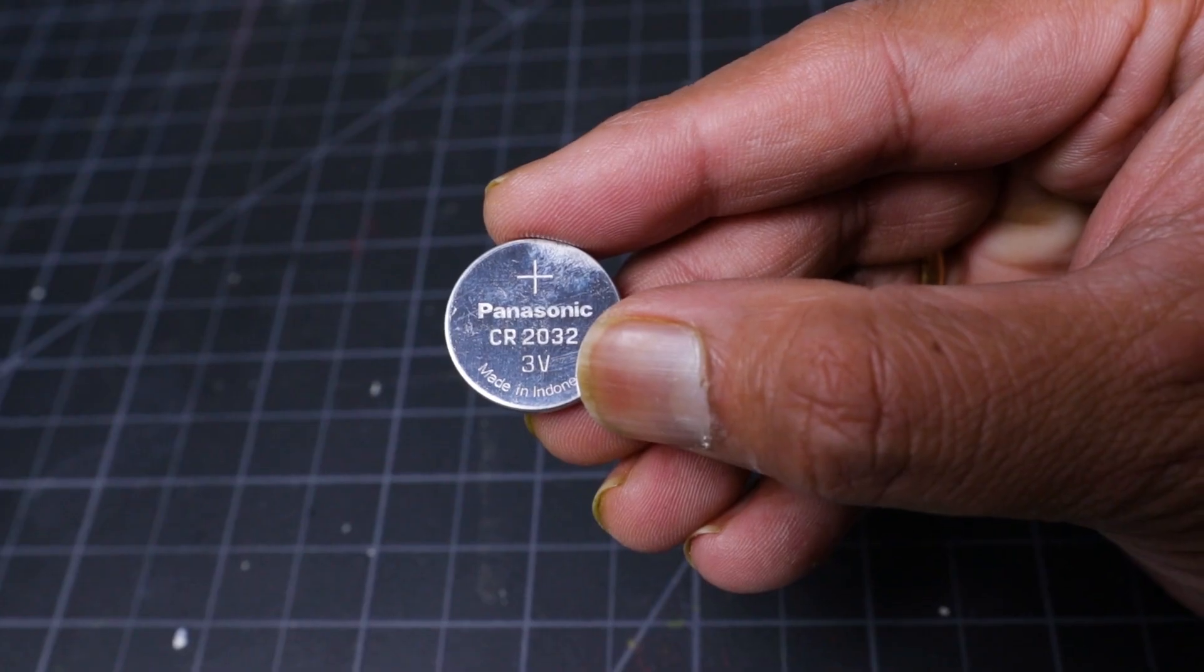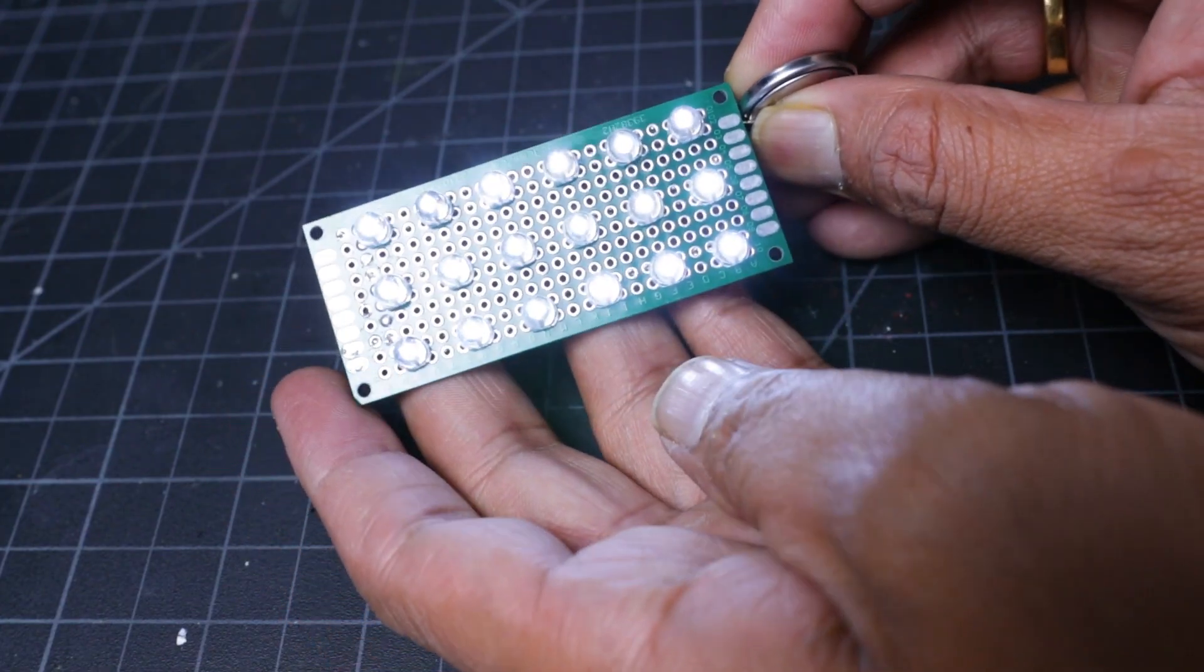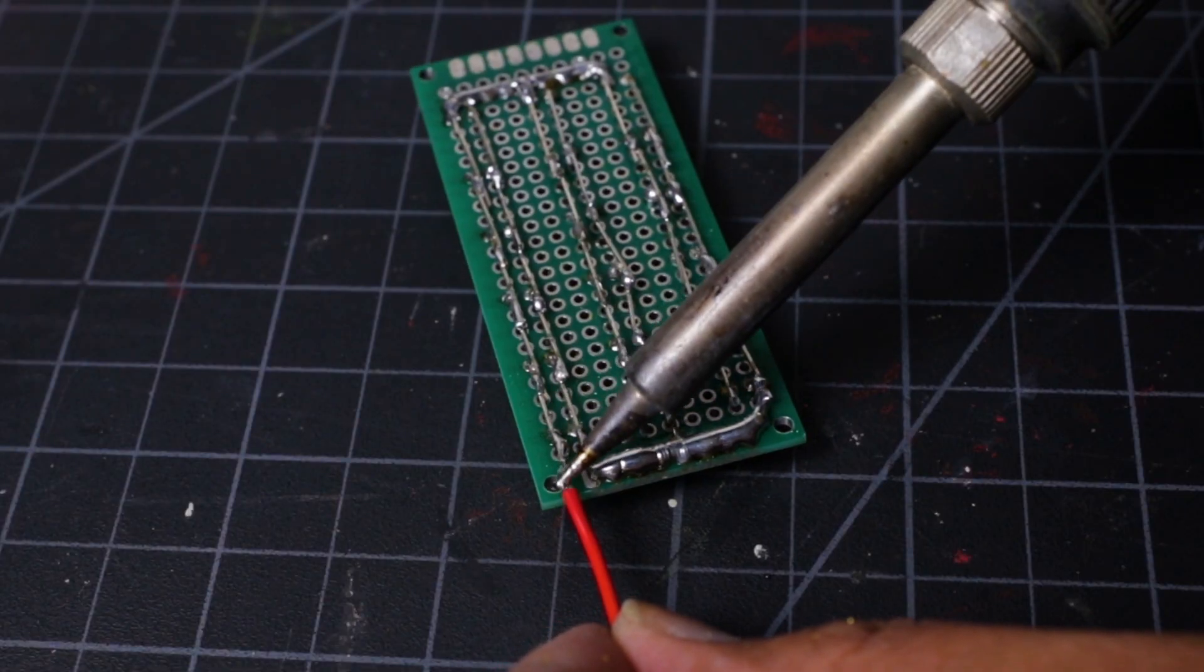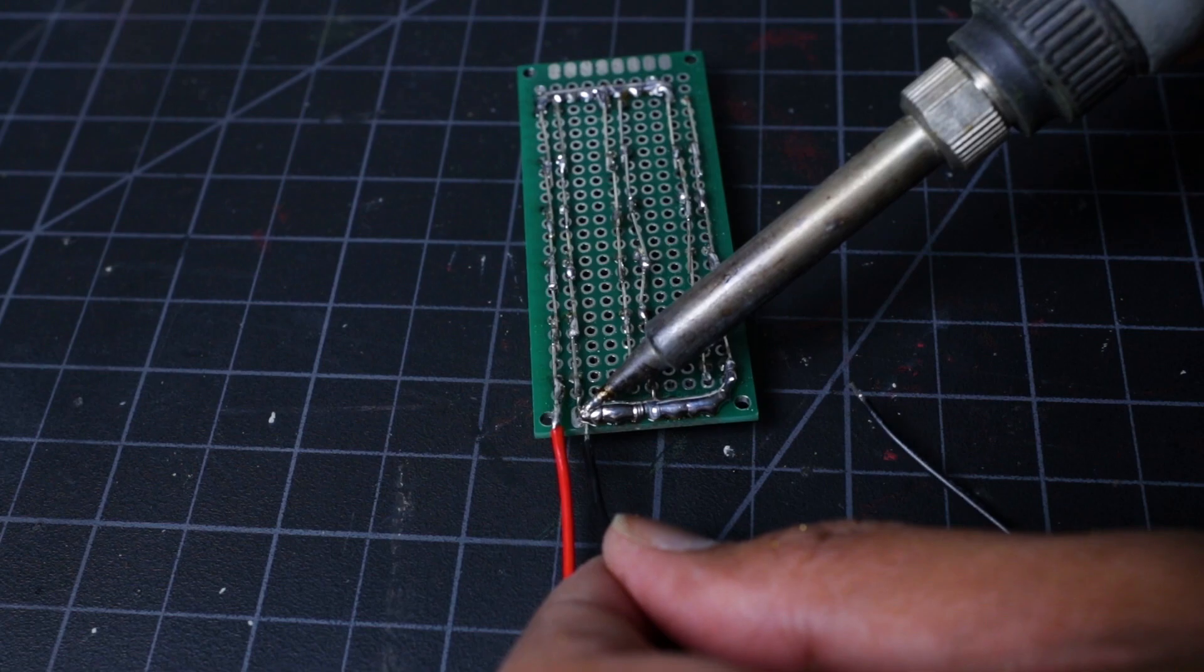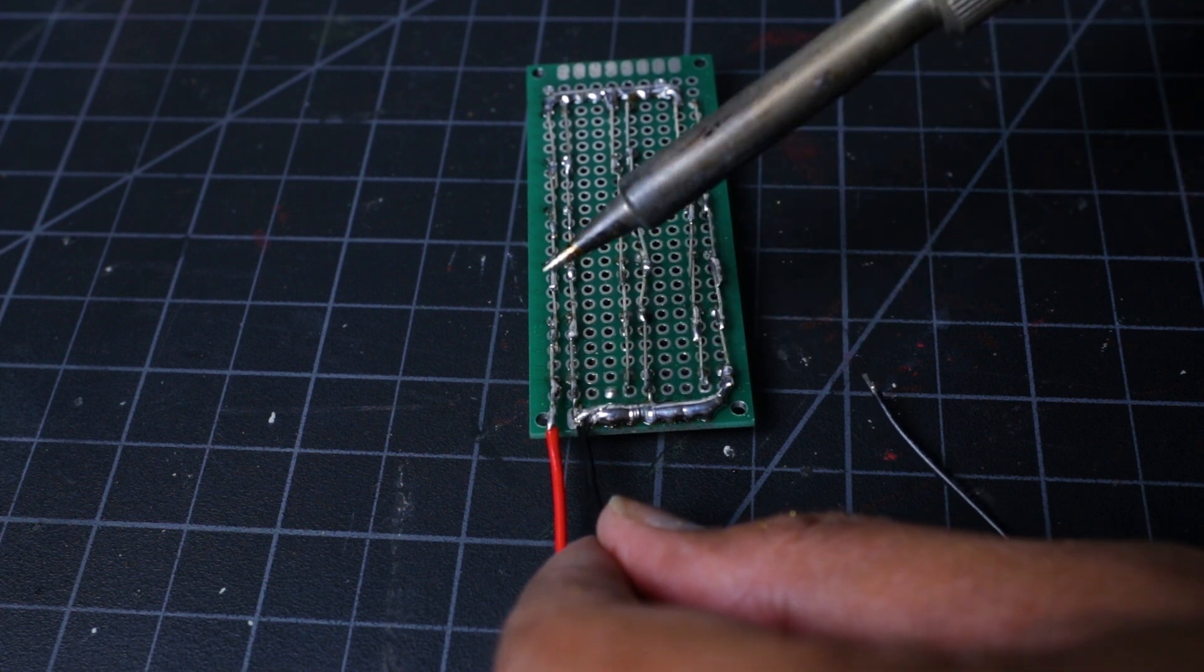After completion of soldering, I checked the circuit by using a coin cell. Then I soldered a 22 AWG red wire to the positive terminal and a black wire to the negative terminal.